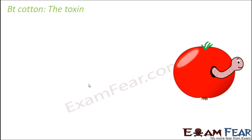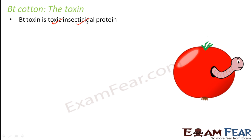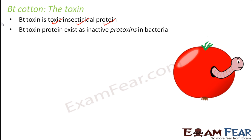Now let us understand how Bt toxin actually works in Bt cotton. Bt toxin is a toxic insecticidal protein — it is poisonous and kills insects, and structurally it is a protein. An important question is: if Bt toxin is toxic, why doesn't it harm the bacteria producing it? That is because inside the bacteria the protein exists in its inactive form called protoxin. As long as it is inside the bacteria it is not poisonous, but as soon as it is taken up by insects, the protoxin gets converted into the active toxin.